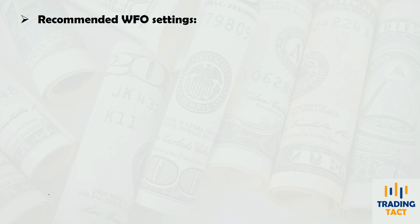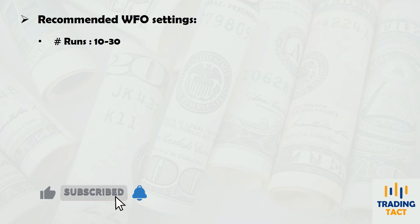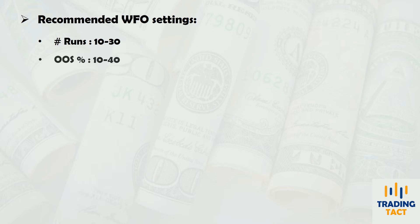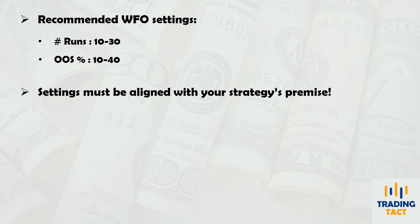In general, I recommend the following ranges: the number of runs should be in the 10–30 range, and the out-of-sample percent should be in the 10–40 range. Finally, the choice of walk-forward settings should be in alignment with the premise of your strategy. For example, if you are developing a trend-following strategy on the daily timeframe, it makes little sense to re-optimize on a monthly basis.